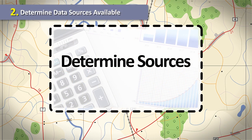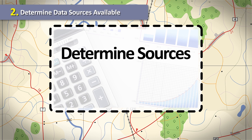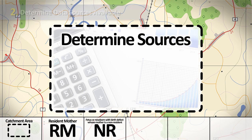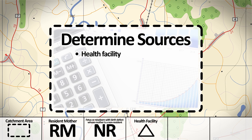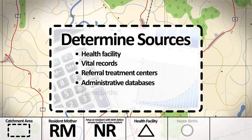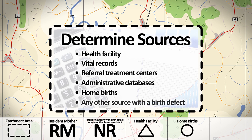The next step is to determine which data sources are available for your program to use for capturing stillbirths and live births with birth defects within the catchment area. Data might be available from health facilities that capture all births and stillbirths, vital records such as birth and death certificates that might contain information about birth defects, referral treatment centers for individuals with birth defects, administrative databases such as hospital discharge records, home birth data, or another source from which a stillbirth or live birth with a birth defect can be identified.